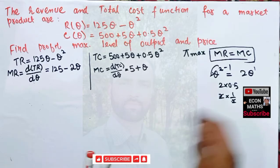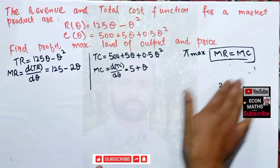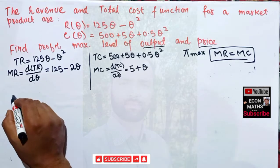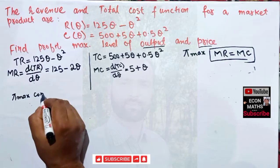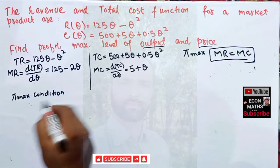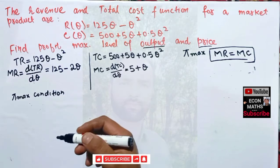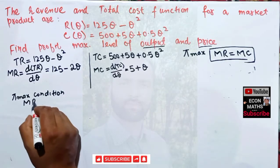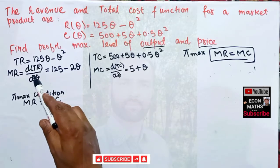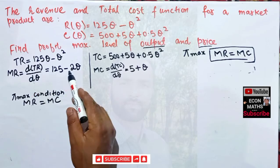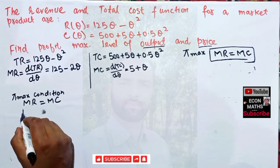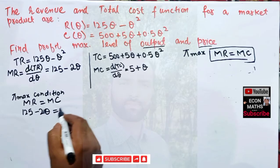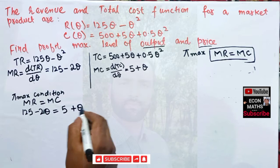Now coming to the solution. We have two conditions for profit maximization. The first-order condition requires MR equal to MC. So we set 125 minus 2Q equal to 5 plus Q.